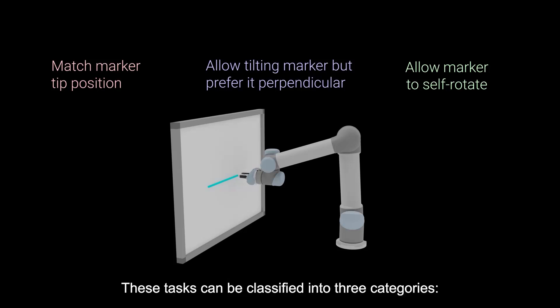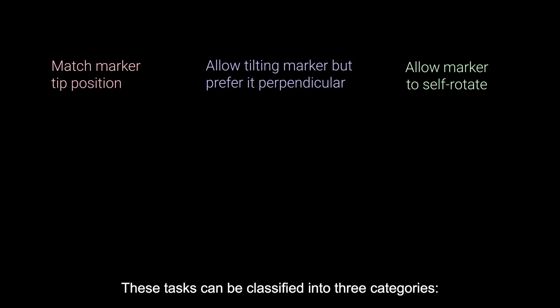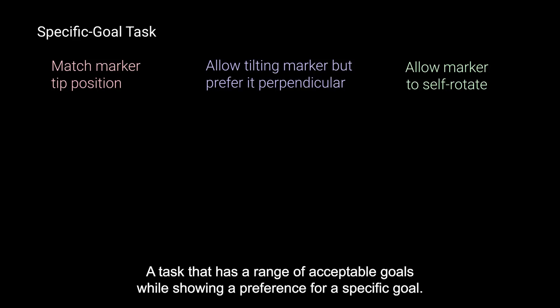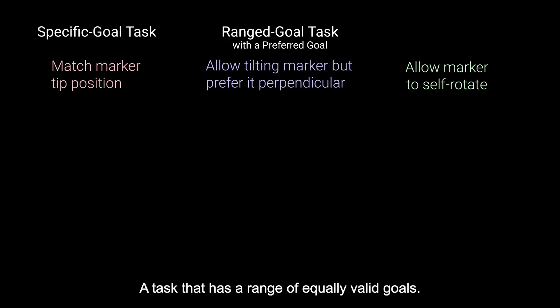These tasks can be classified into three categories: a task that has a specific goal, a task that has a range of acceptable goals while showing a preference for a specific goal, and a task that has a range of equally valid goals.